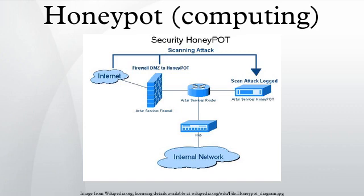In computer terminology, a honeypot is a trap set to detect, deflect, or in some manner counteract attempts at unauthorized use of information systems. Generally, a honeypot consists of a computer, data, or a network site that appears to be part of a network, but is actually isolated and monitored, and which seems to contain information or a resource of value to attackers. This is similar to the police baiting a criminal and then conducting undercover surveillance.